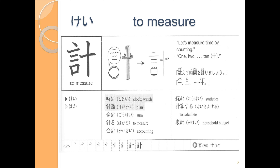So when we are counting words — using words that we use for counting — we're using them to measure. So this is the けい of とけい and the けい of けいかく. So let's write together.